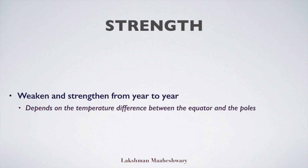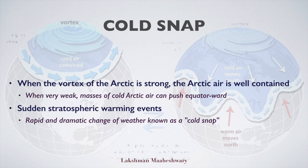The vortices weaken and strengthen from year to year — they strengthen in the winter and weaken in the summer. The exact strength depends on the temperature difference between the equator and the poles. When the Arctic vortex is strong, it is well defined and the Arctic air is well contained. But when the vortex is very weak, the flow of Arctic air becomes more disorganized and masses of cold Arctic air can push equatorward.